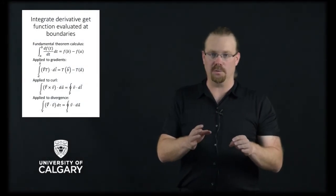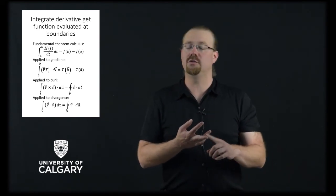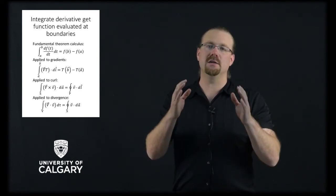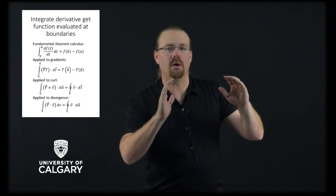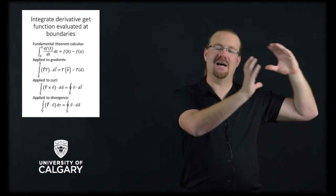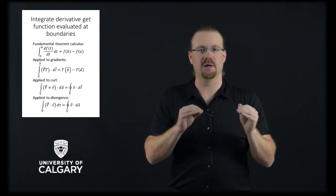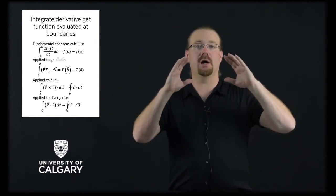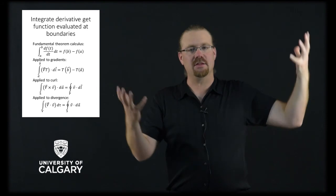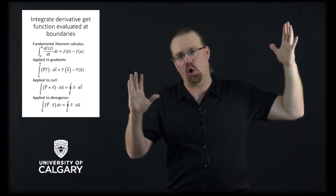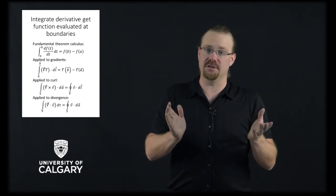This video has shown that there is a deep relationship between the fundamental theorem of calculus, the fundamental theorem of gradients, Stokes' theorem, and the divergence theorem. In each case, we evaluate the derivative of a function, integrate that, and what we wind up with is that function evaluated at the boundaries again. This has deep, deep implications for electricity and magnetism — it means that we will be able to measure or describe our electric field, magnetic field, or electric potential at the boundary of some surface and tell what's happening throughout. These theorems will come up again and again throughout your study of electricity and magnetism and physics in general.